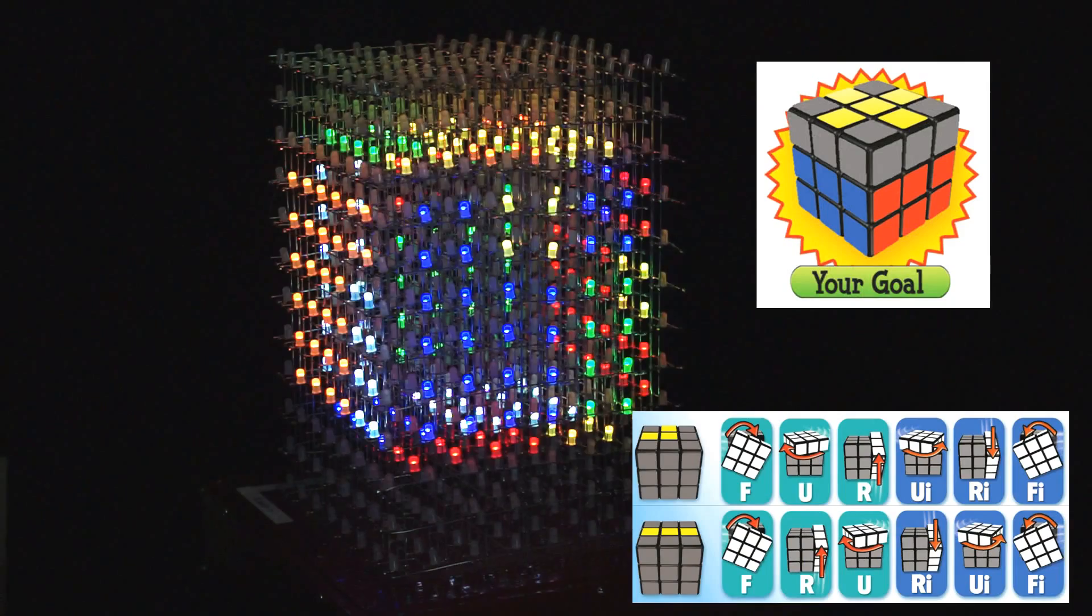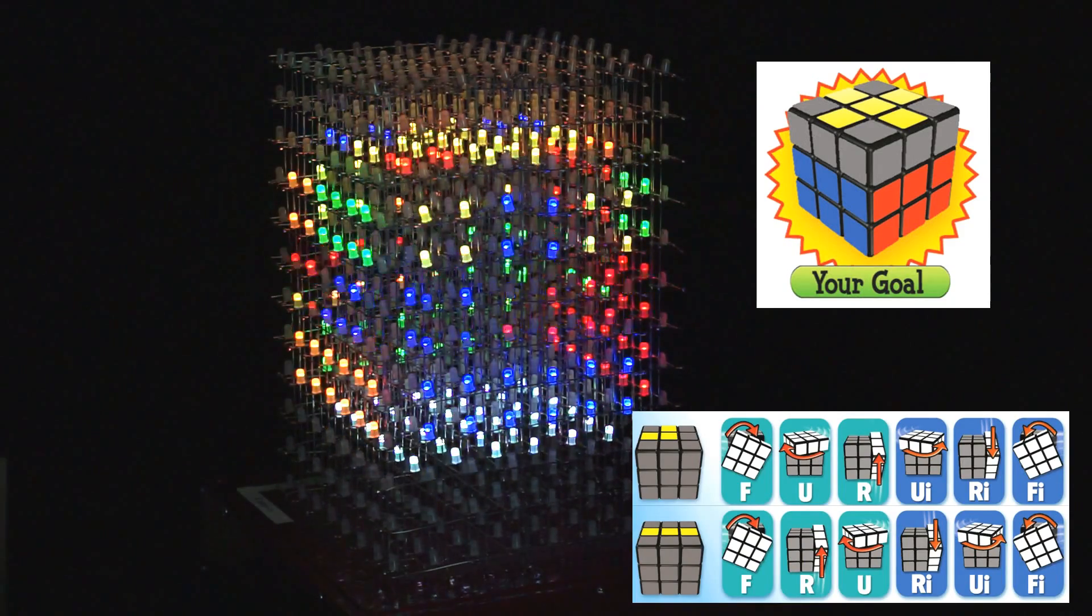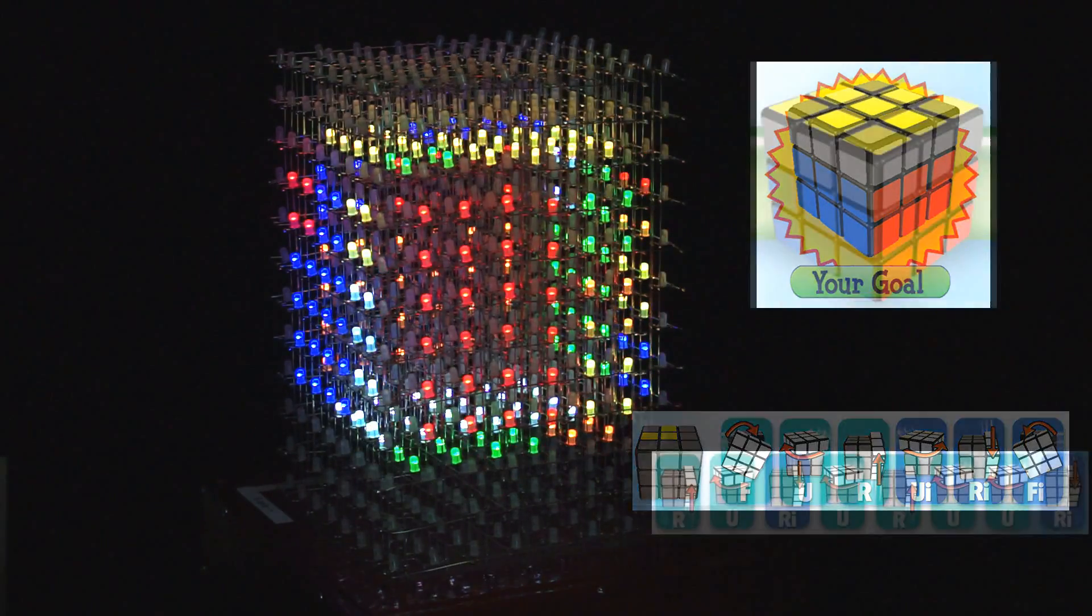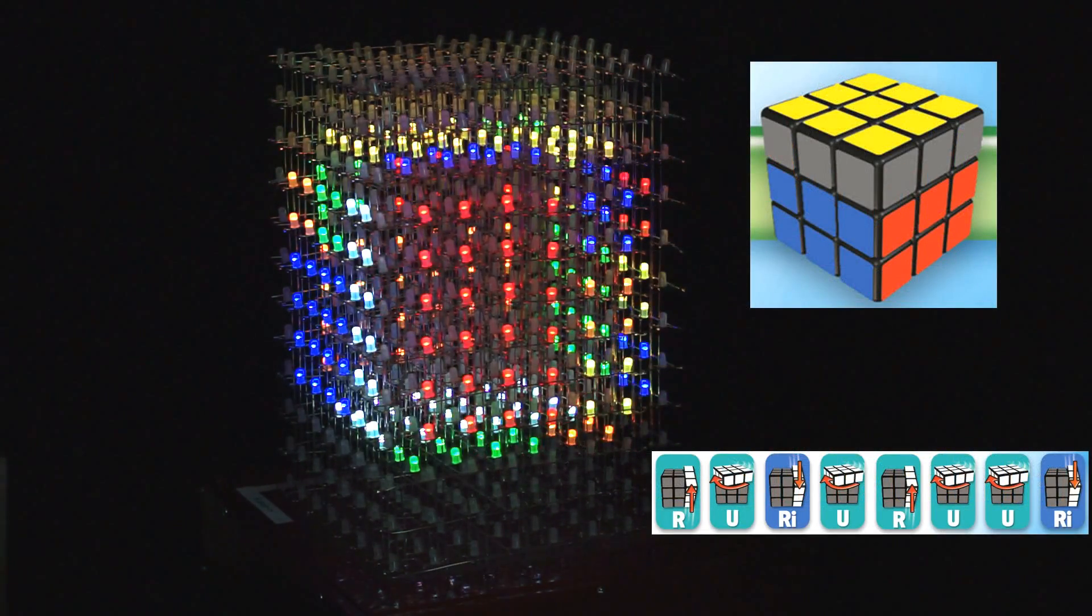Okay, now once you've got the center section, we need to get a yellow cross on the top. Again, there are a few algorithms here, and I've marked them up depending on the location or the arrangement of the top.